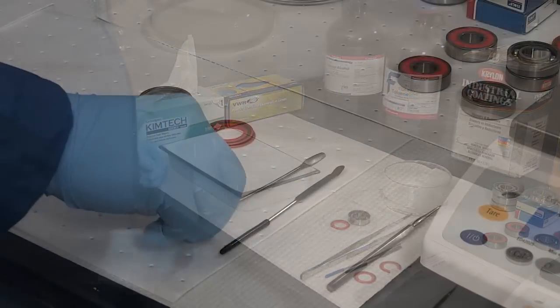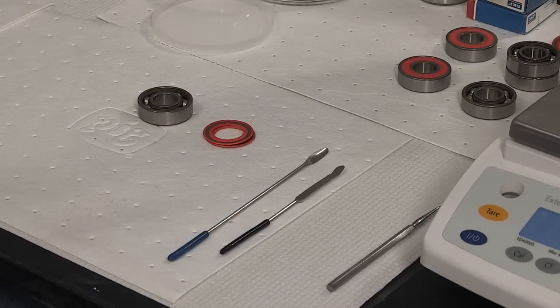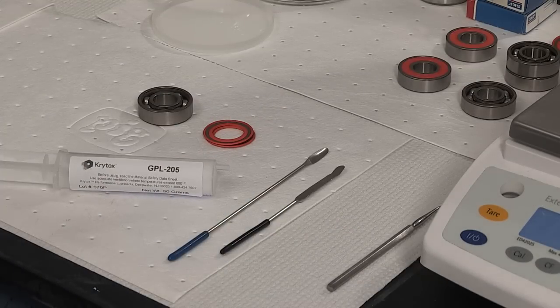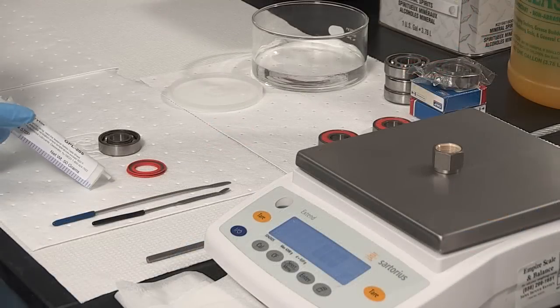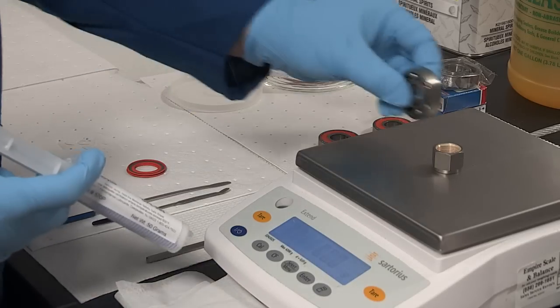When repacking, lubricate the bearing with the specified grease. For some applications, the rolling elements may be pre-lubricated with a few drops of Krytox oil of the same viscosity as the base oil in the grease.